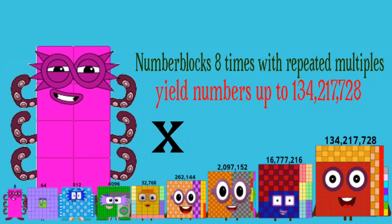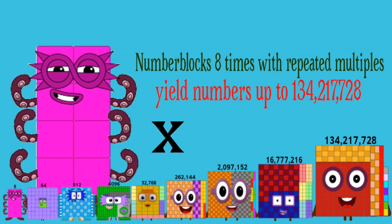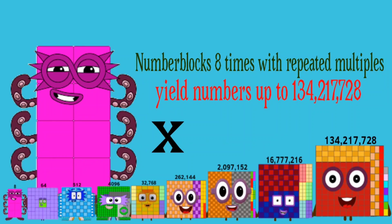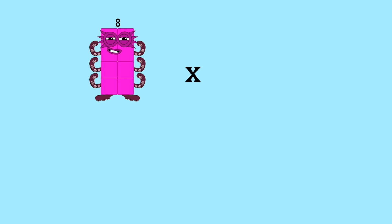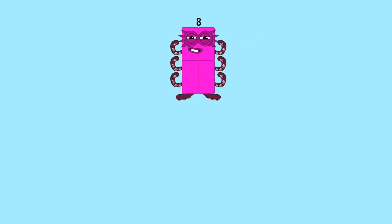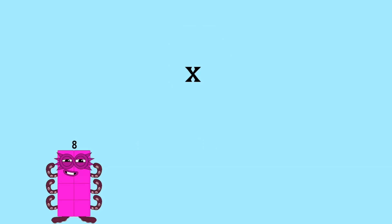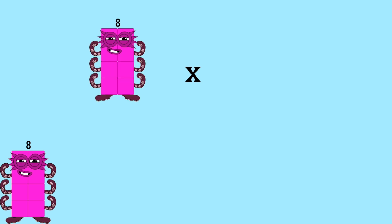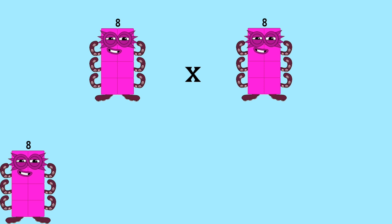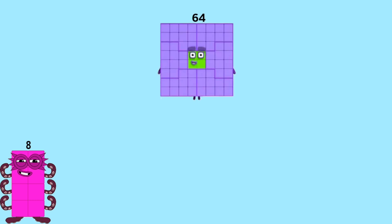Number blocks: 8 times, with repeated multiples, yields numbers up to 134,217,728. 8 times 1 equals 8. 8 times 8 equals 64.